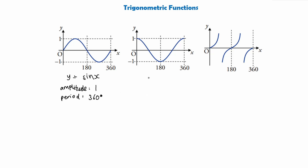Now we'll move on to the second graph, which is going to be our cosine graph — y equals cos x. Some people write degrees, it's completely up to you, you don't need to, it's implied. For our cosine graph, it starts at one, which is actually its max value, goes down to zero, then goes down to minus one, back up to zero before finishing its period back at one. In this case, the amplitude is exactly the same — it's simply one, half of the distance from the max to the min. And we also have the period of 360 degrees, just like the sine wave.